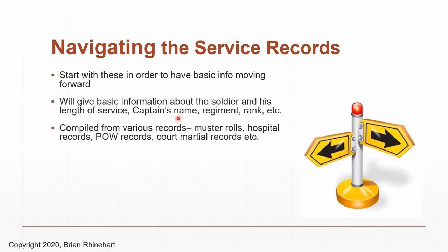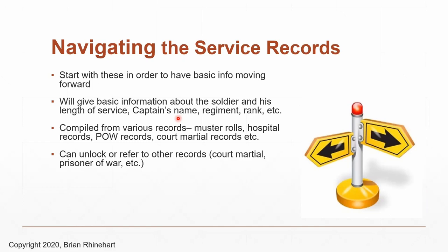Because these are compiled military service records, as the name suggests, they're compiled from various records at the National Archives — such as muster rolls, hospital records, prisoner of war records, and so on. Pension clerks went through all of these, and every time they found a soldier's name they'd write up a card and put it in the service record packet. They can also help unlock other records: if your ancestor was court-martialed, you know to look for those records; if he was taken prisoner, you can look for prisoner of war records.